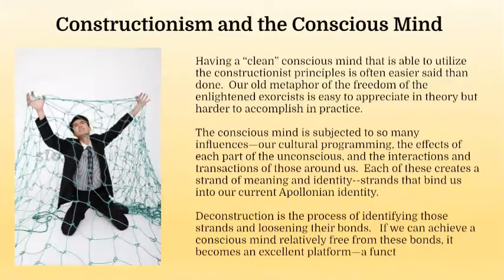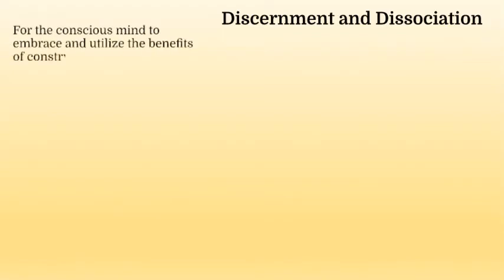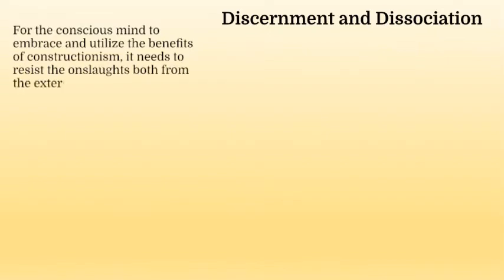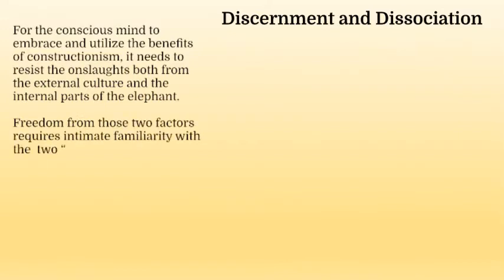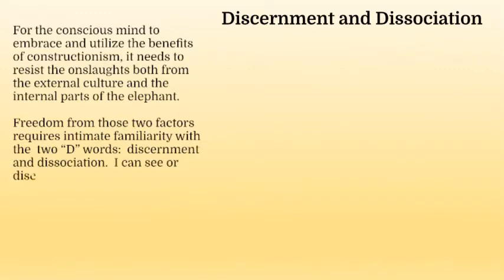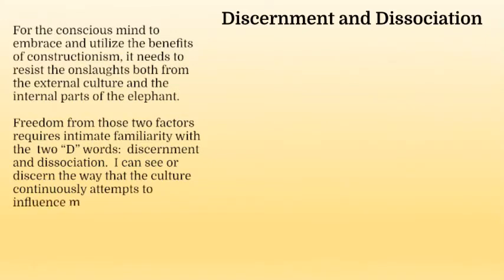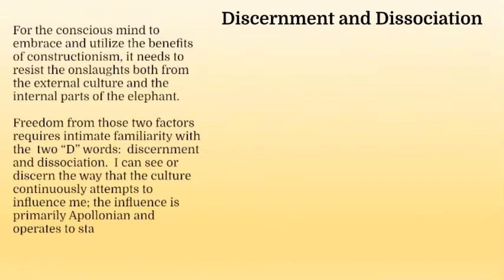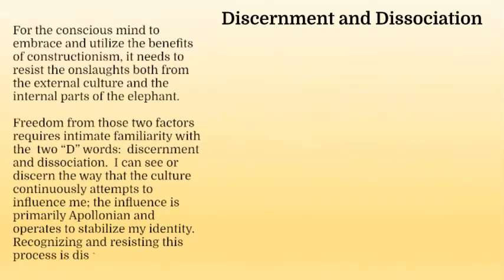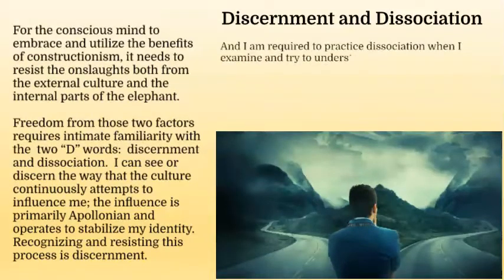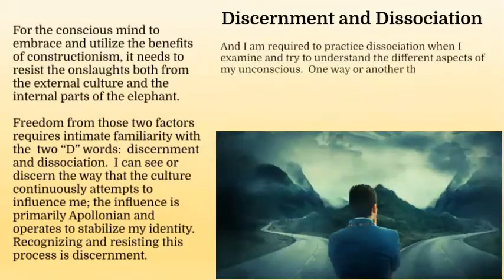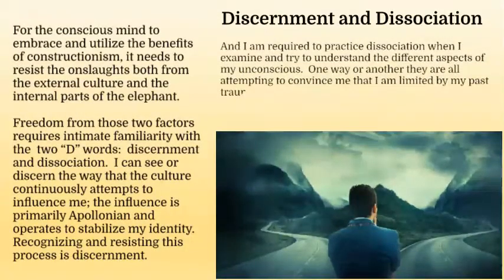Discernment and dissociation. For the conscious mind to embrace and utilize the benefits of constructionism, it needs to resist the onslaughts both from the external culture and the internal parts of the elephant. Freedom from those two factors requires intimate familiarity with the two D words: discernment and dissociation. I can see or discern the way that the culture continuously attempts to influence me — the influence is primarily Apollonian and operates to stabilize my identity. Recognizing and resisting this process is discernment. And I am required to practice dissociation when I examine and try to understand the different aspects of my unconscious. One way or another, they are all attempting to convince me that I am limited by my past traumas, my biochemistry, and my genetic proclivities. Identification with these parts and their messages tends to create confusion, self-deprecation, and pain.